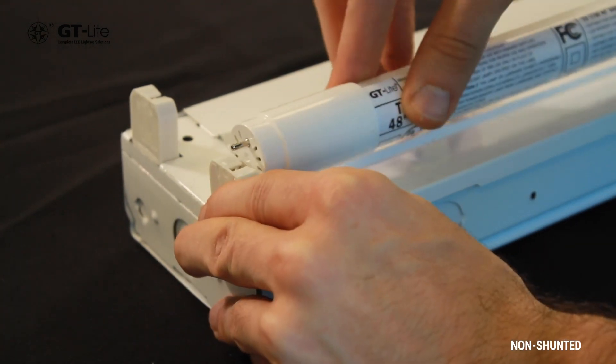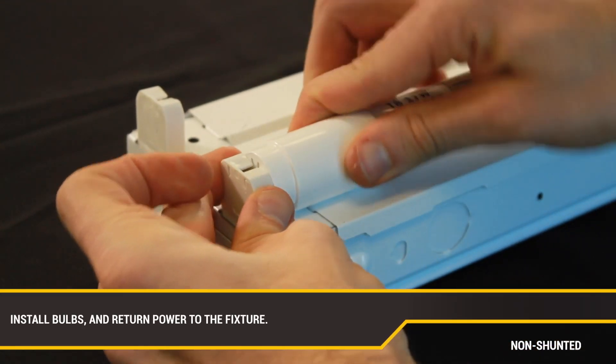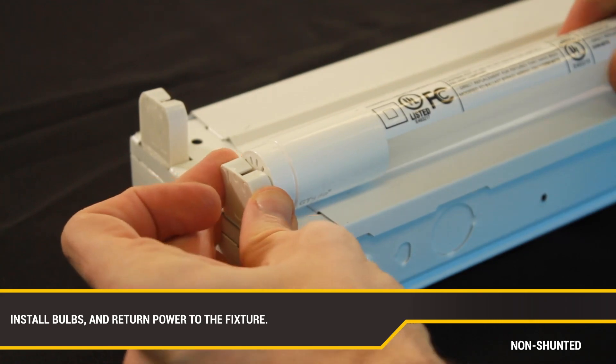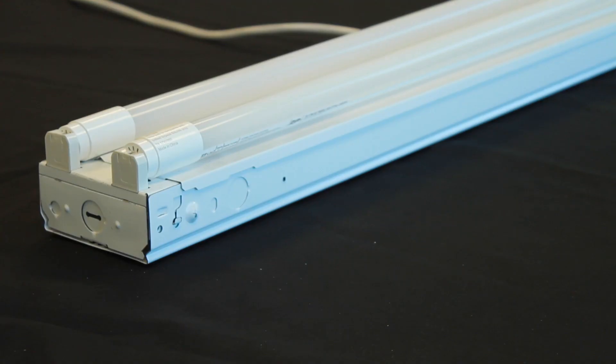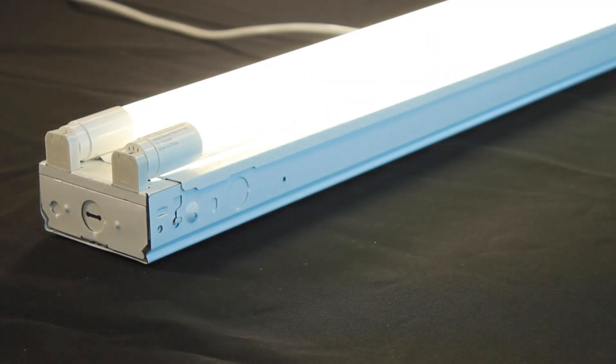Install the bulbs into the bypass fixture and reconnect the power. Test that the bulbs turn on properly. If there is any flickering, double-check all the wiring connections or call the manufacturer.